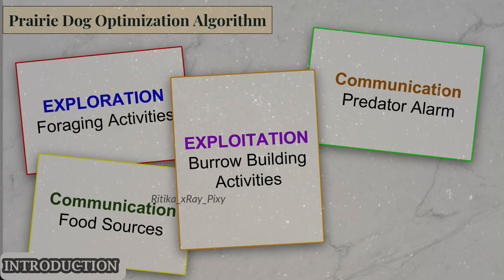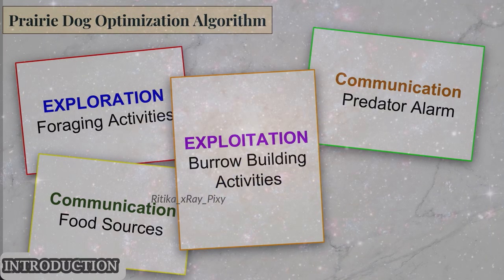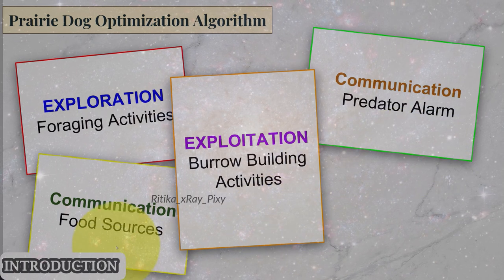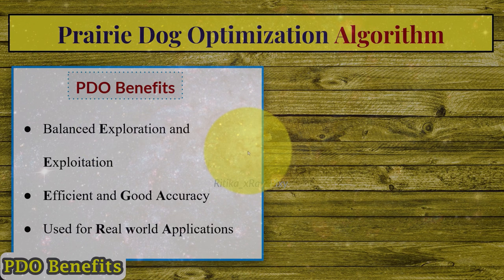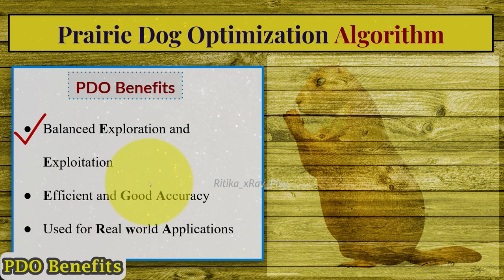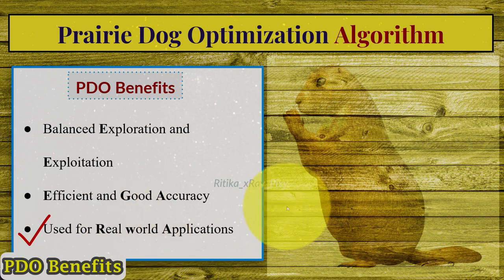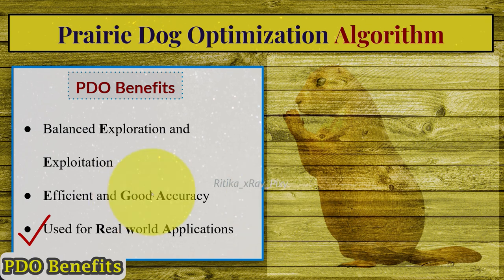Different mathematical models are used in this algorithm. To perform exploration, prairie dog foraging activities are simulated. For exploitation, the burrow construction activities are simulated. For communication, we have food source and predator alarm signals. The benefits of this algorithm include a balance between exploration and exploitation phases, efficiency and good accuracy when compared with other algorithms, and suitability for various real-world optimization problems.